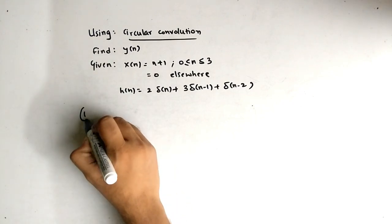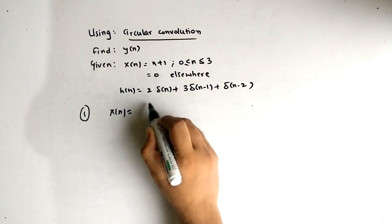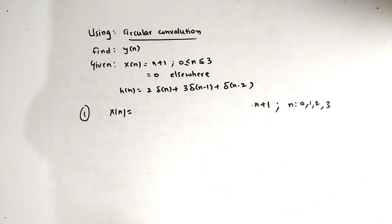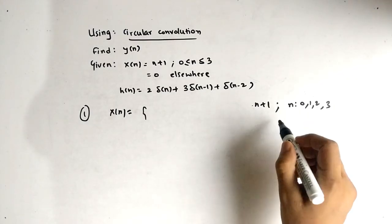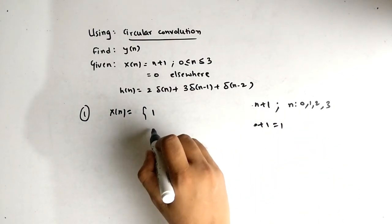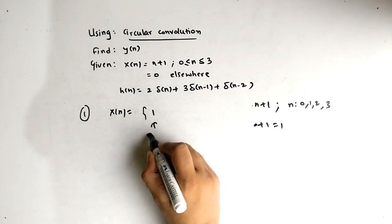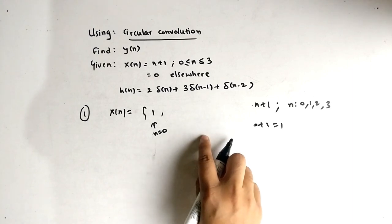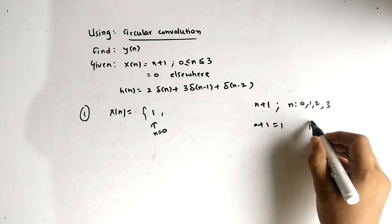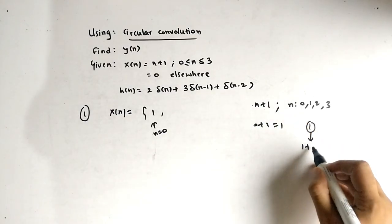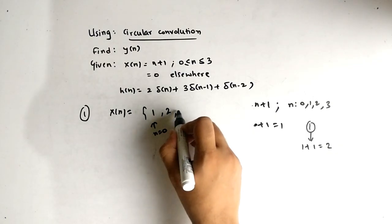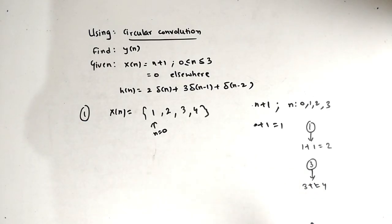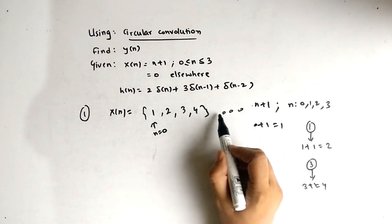Let's simplify the signals. x(n) = n+1 where n ranges from 0 to 3. When n=0, amplitude is 0+1=1. The arrow means n=0. When n=1, amplitude is 1+1=2. When n=2, amplitude is 3. When n=3, amplitude is 3+1=4. After that the signal is equal to 0, so neglect that. So x(n) = [1, 2, 3, 4].